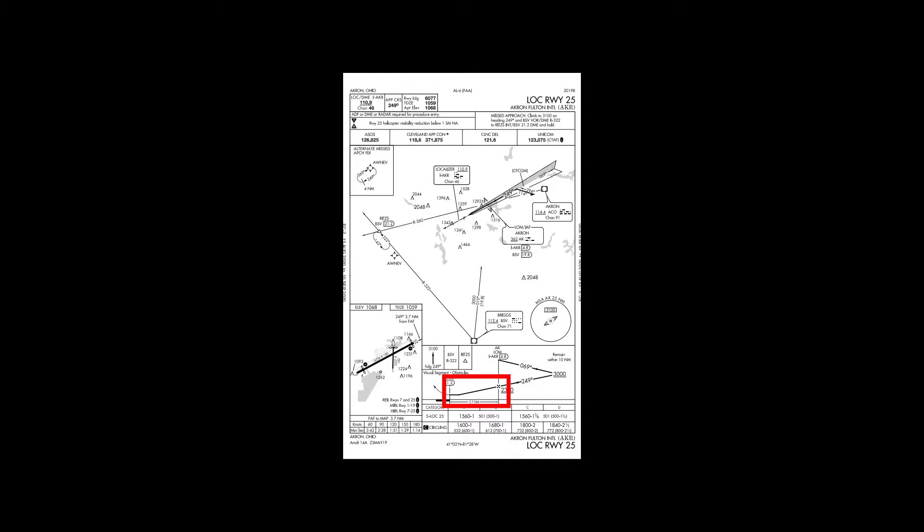This approach does not have a glide slope, and there's also now a minimum descent altitude instead of a decision height. With this approach, when we cross the locator outer marker at 4.8 DME, we'll descend down to 1,560 feet, and that'll put us at an altitude of 501 feet above the ground.